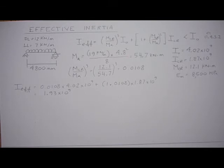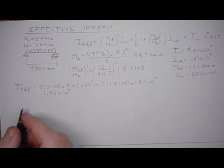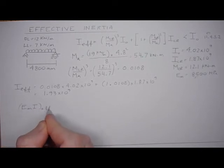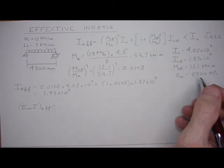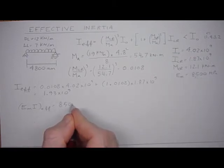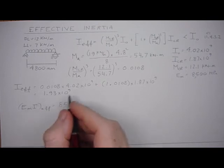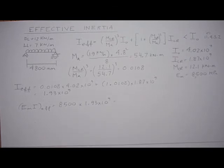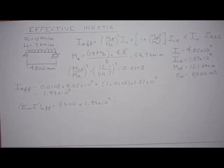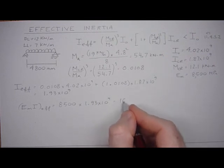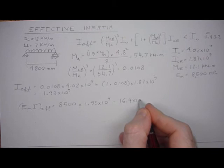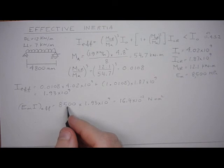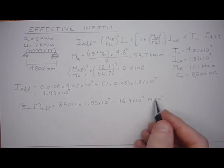And we can go further still and calculate really what EMI effective is. So EMI effective is going to be 8500 times 1.93 times 10 to the 9th. So that's 16.4 times 10 to the 12th newton millimeters squared. This is newtons per millimeter squared, this is millimeters to the fourth, so newton millimeters squared.